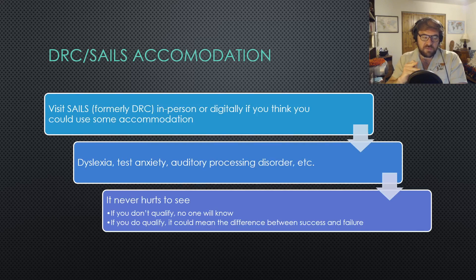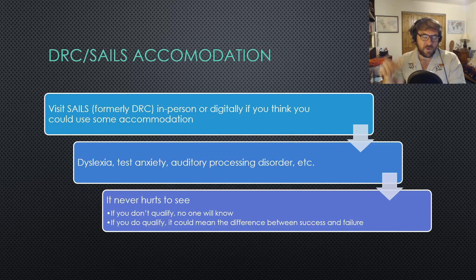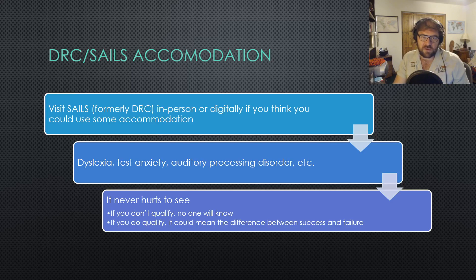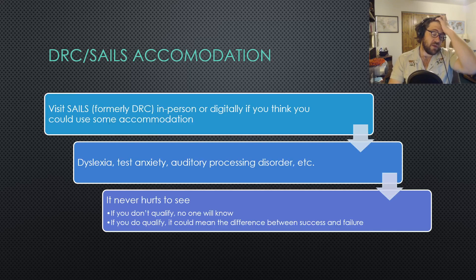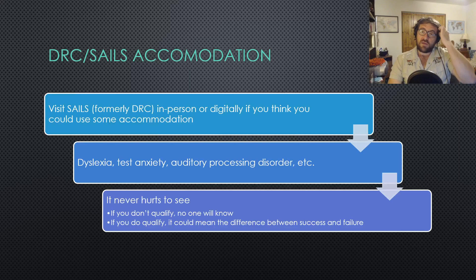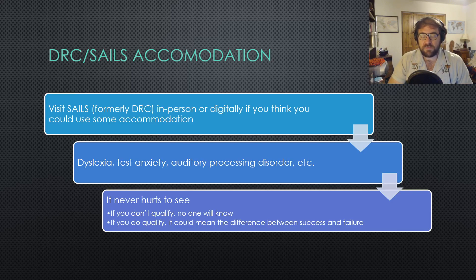The DRC stands for the Disability Resource Center. SAILS stands for Student Accommodation — I don't remember the exact acronym, but it's the new name for the DRC. You should visit them digitally or in person if you think you could use some accommodation. In person if you're here in Arizona; digitally if you're anywhere else — they've got a ton of people that work online via Zoom. Some things you could use accommodations for are obvious — like if you've been injured partway through the semester. Contact SAILS. You can also email me with a doctor's note and I can give you a couple extra days for an injury or illness.